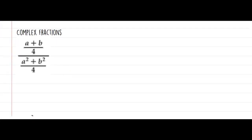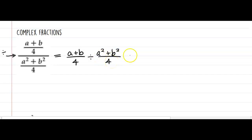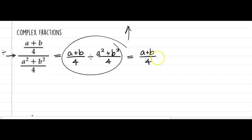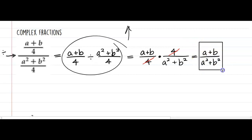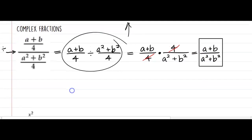Complex fractions are the last topic. A fraction over a fraction simply means division: (a plus b) over 4, divided by (a squared plus b squared) over 4. Rewrite the first fraction and multiply by the reciprocal of the second. The 4's cancel, and the final answer is (a plus b) over (a squared plus b squared). Don't let the name confuse you — complex fractions aren't too bad. A fraction over a fraction equals a fraction divided by a fraction, which equals a fraction multiplied by the reciprocal.